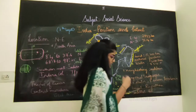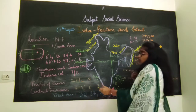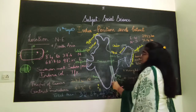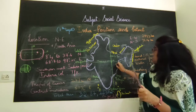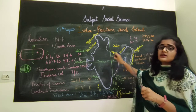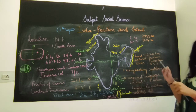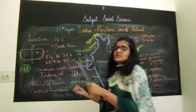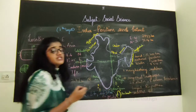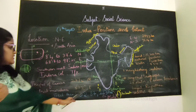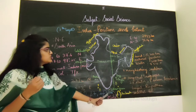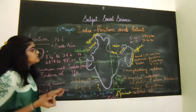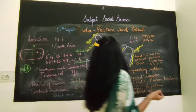Another longitude passing through India is the Standard Meridian, which passes through the center of India. This Standard Meridian is the basis for Indian Standard Time — IST is calculated based on this Standard Meridian, which is 82 and a half degrees east longitude. So these two — the Tropic of Cancer and the Standard Meridian — are the key latitude and longitude passing through India.